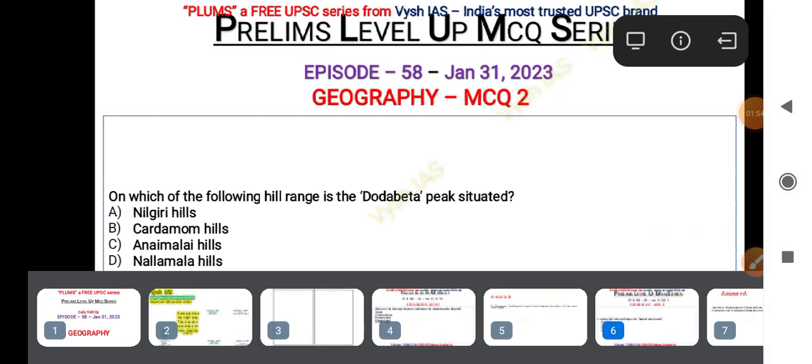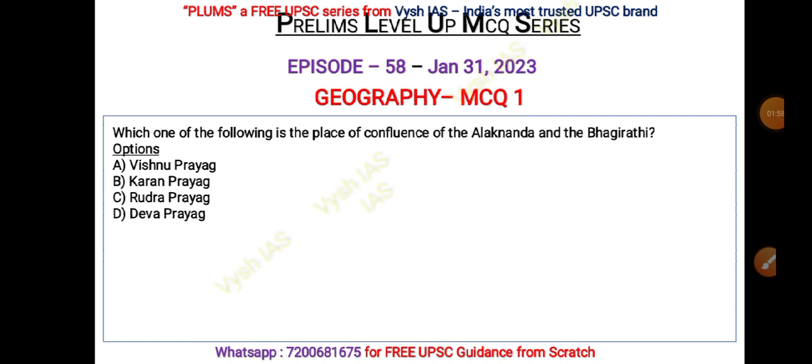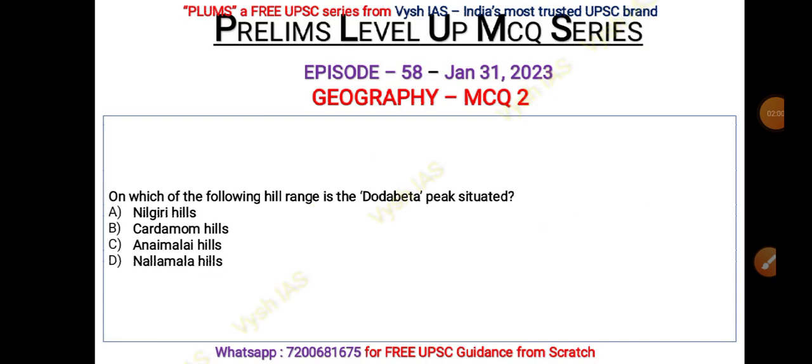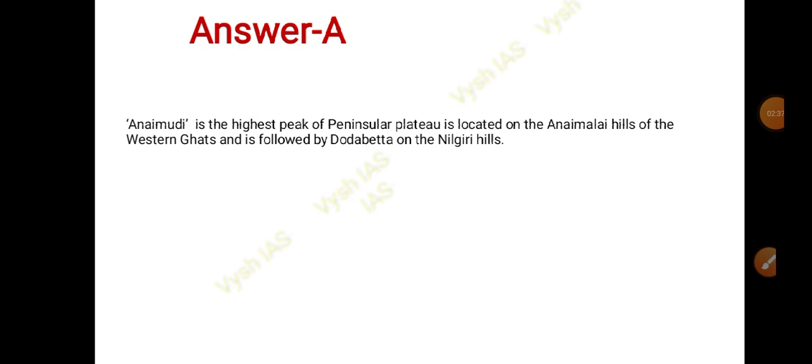The second question is: on which of the following hill ranges is the Doddabeta peak situated? Doddabeta peak — to which hill range does it belong? Options are: A) Nilgiri Hills, B) Cardamom Hills, C) Annamalai Hills, D) Nalamala Hills. You also have to answer in the comments what is the common link between all these hills.